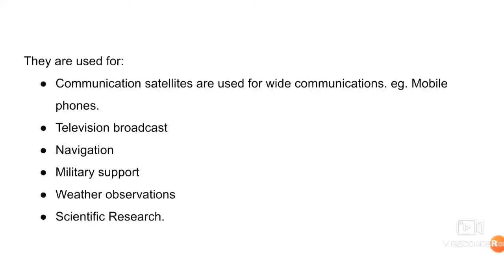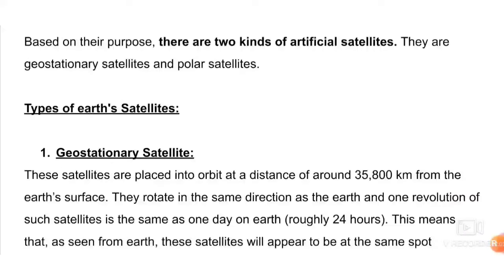Today, with the help of artificial satellites, we are able to do many tasks. Based on their purpose, there are two kinds of artificial satellites: geostationary satellites and polar satellites.